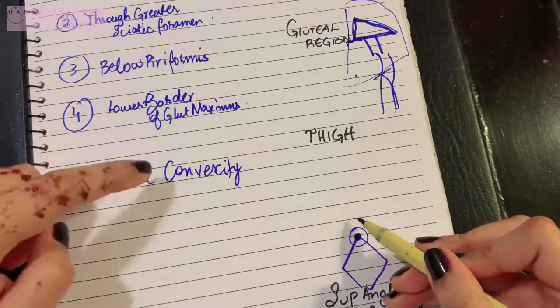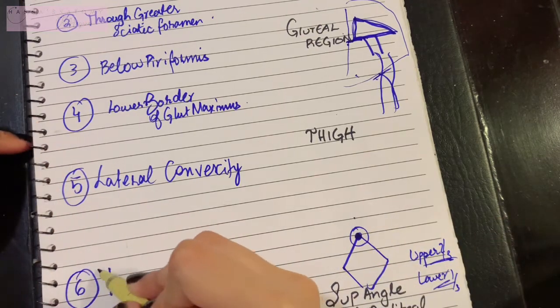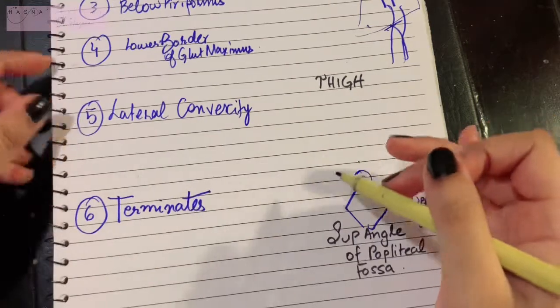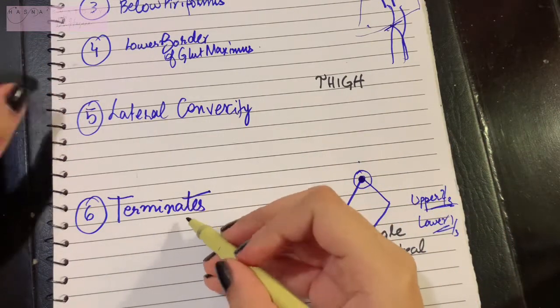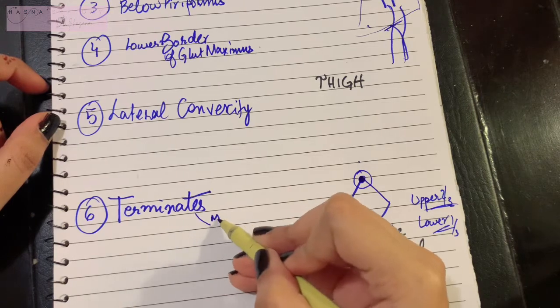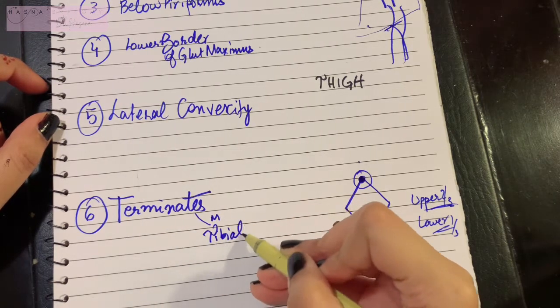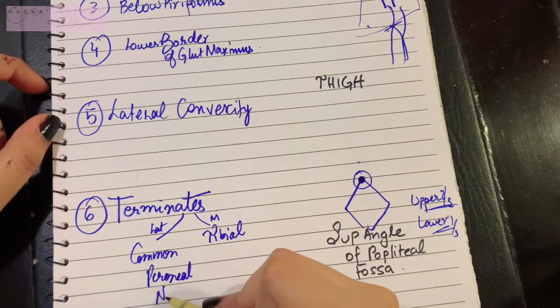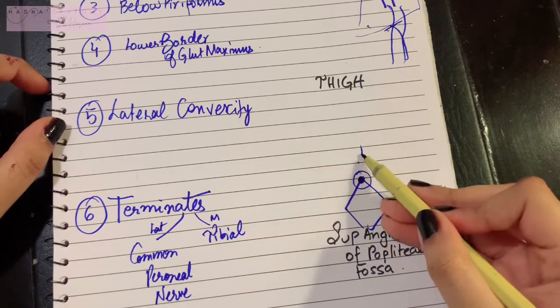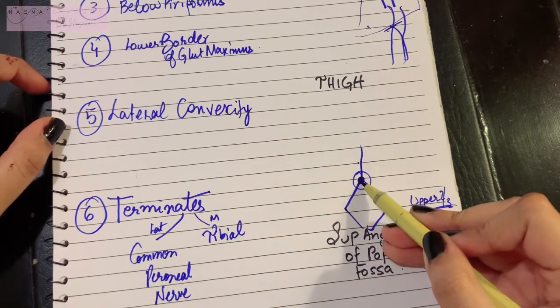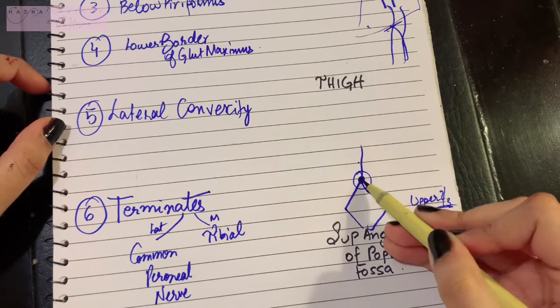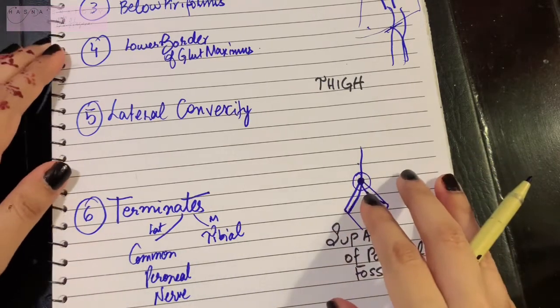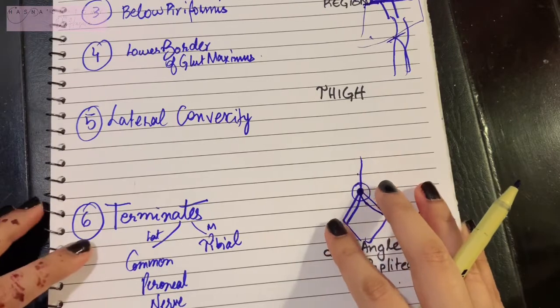This is where the sciatic nerve, point number six, terminates by dividing into its two terminal branches. These branches will have similar names to the parts that originated the sciatic nerve: medially the tibial nerve and laterally the common peroneal nerve. That's how sciatic nerve ends. The sciatic nerve gives a medial branch called the tibial nerve and a lateral branch called the common peroneal nerve. That was basically how your sciatic nerve undergoes origin, course, and termination.